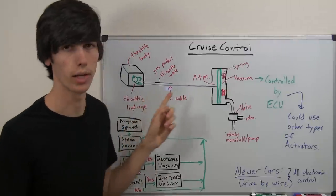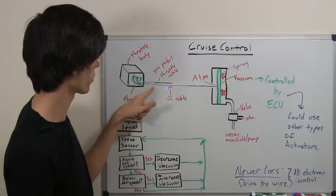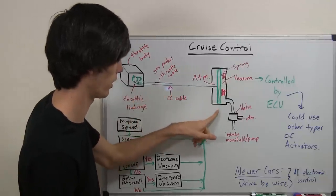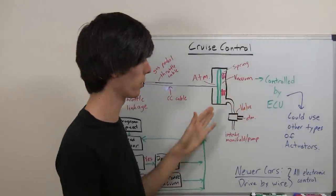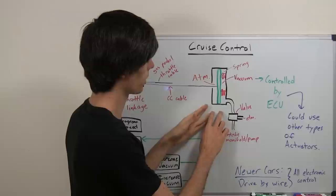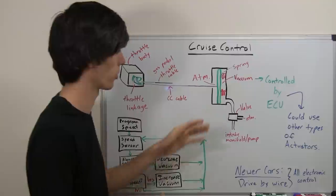Now you don't have to have two cables, which I'll show later, but this is one way of doing it. So you've got this cruise control cable which is connected to an actuator. It does not have to be this specific type of actuator. It could be a different type, but here I'm just using a vacuum actuator which was common in older cars that use cruise control.